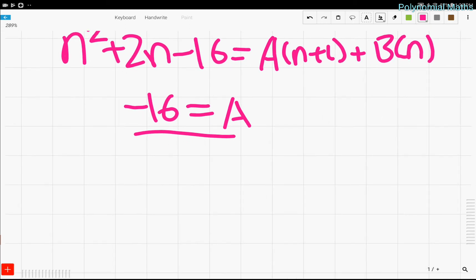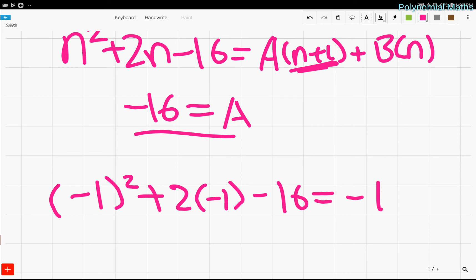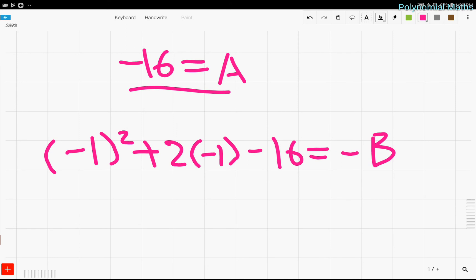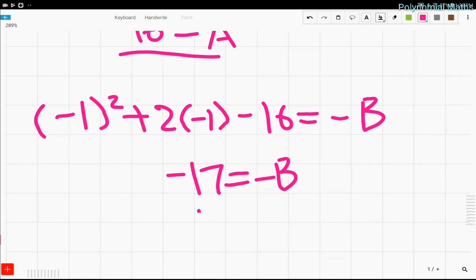Now, we just have to solve for b. So, we see that plugging in negative 1 cancels out with the 1 over here and so a will become 0. So, let's just plug in negative 1. We're left with negative 1 squared plus 2 times negative 1 minus 16 equals negative b. And then, this ends up being 1 minus 2 minus 16, which is equal to negative 17 equals negative b. So, b ends up equaling 17.